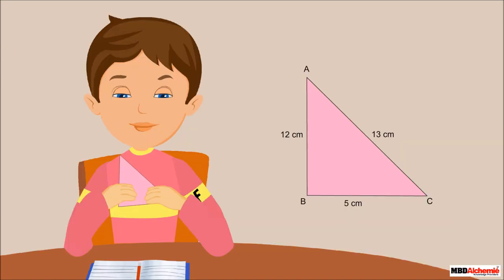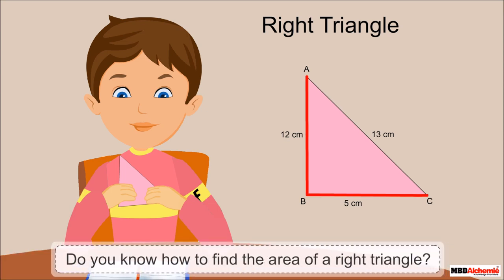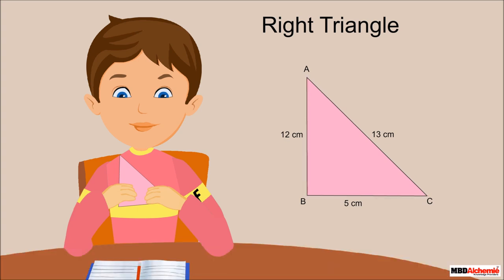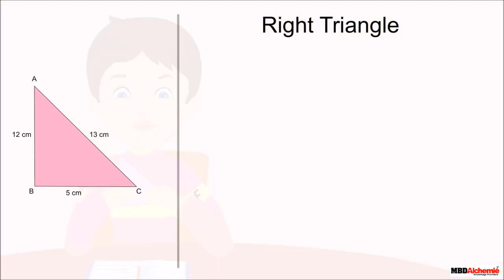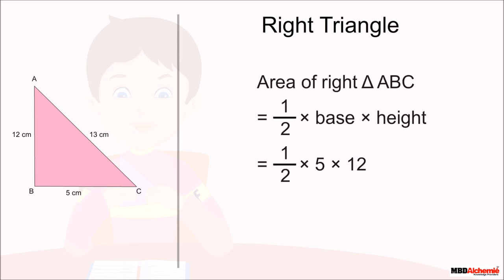Sid identifies his triangle and says it is a right triangle. He finds the area using the formula: the area of a right triangle is half the product of its base and height.